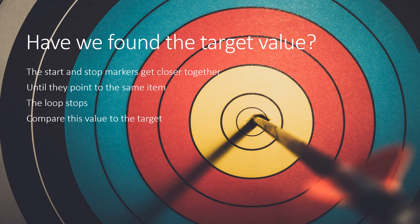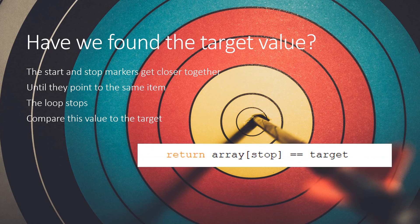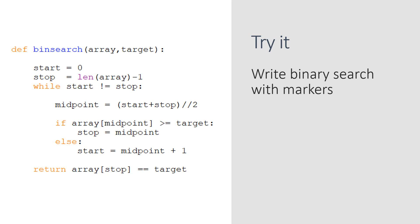These commands are inside a loop, so every time the loop repeats the start and stop markers get closer together. Eventually they will both point to the same item in the list, at which point the loop stops. We then return the result of comparing the value at the stop marker with the target — you could equally use the start marker since they're both pointing to the same thing. Here's the completed binary search function using start and stop markers instead of slicing the list.